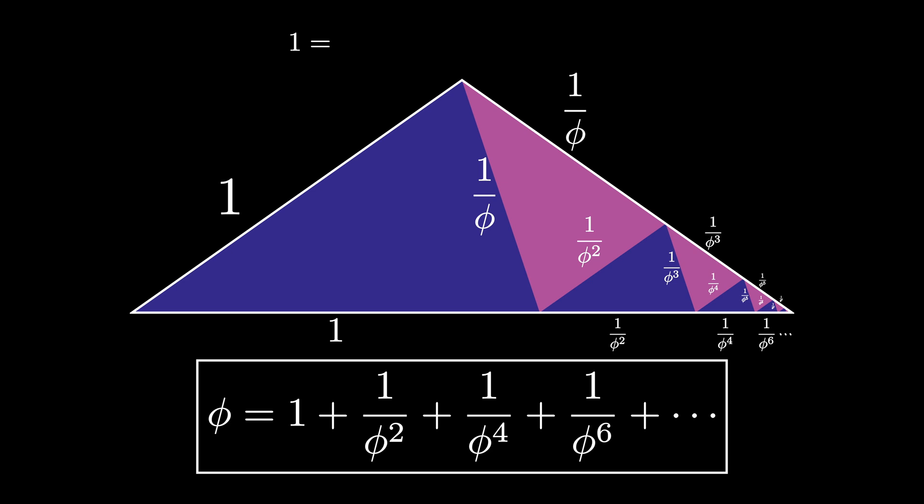Therefore, 1 is equal to the infinite sum of the reciprocals of the odd powers of the golden ratio.